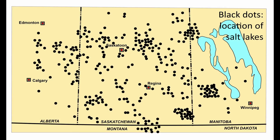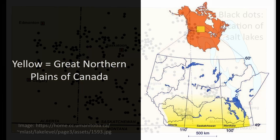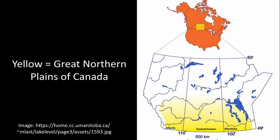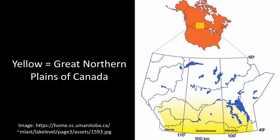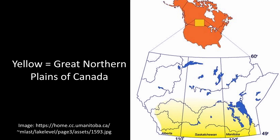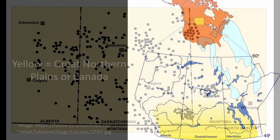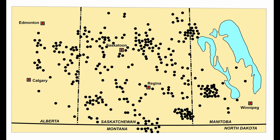When I speak of a natural salt lake, I'm not highlighting a single place. Rather, I am referring to many salt lakes that occur across southern Saskatchewan, Manitoba, and southeastern Alberta, concentrated in a geographic area that is often called the Great Northern Plains of Canada. The general distribution of these lakes is illustrated by the black dots in this image.